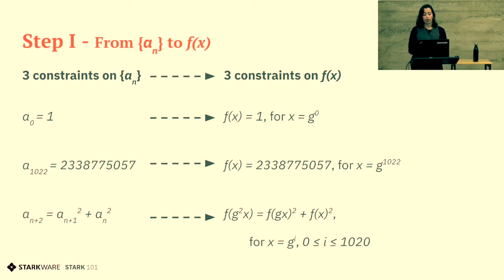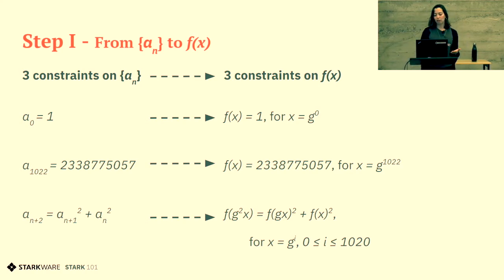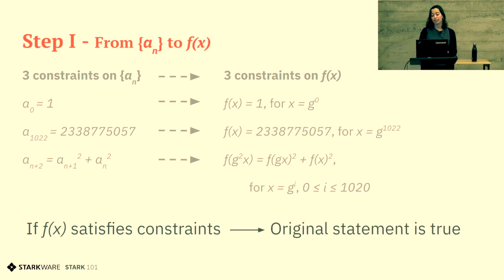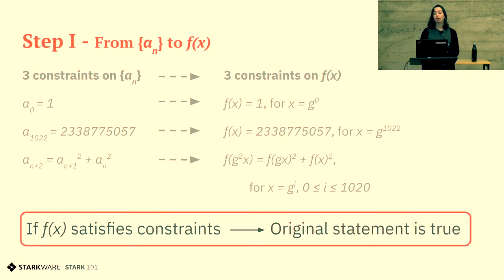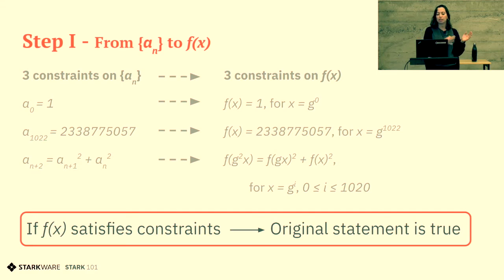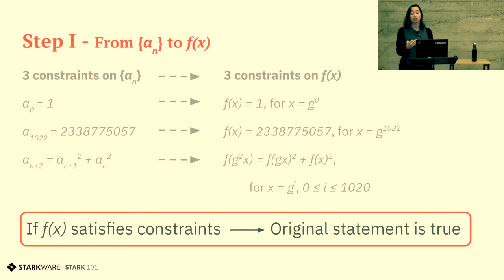So we modified our constraint from being a constraint on aₙ to a new set of constraints in the language of f(x). If f(x) satisfies these constraints, it means the original statement is true. So it's sufficient to show the set of constraints on f(x), and we can forget about the constraint on aₙ. This was the first step in the reduction.